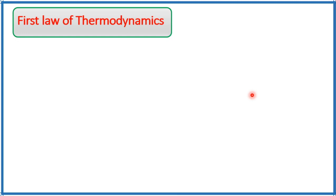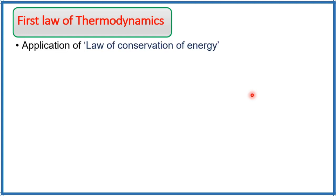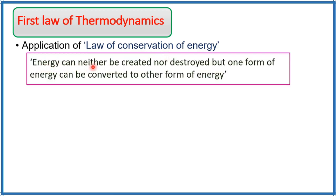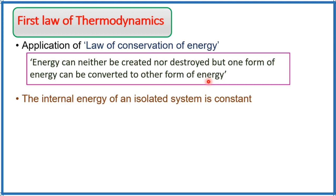Now we will discuss the first law of thermodynamics. This first law is the application of the law of conservation of energy, which states that energy can neither be created nor destroyed, but one form of energy can be converted to another. That means energy remains the same — we cannot create it and we cannot destroy it. Another form of this statement is: the internal energy of an isolated system is constant.